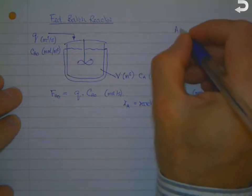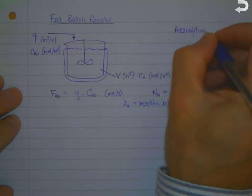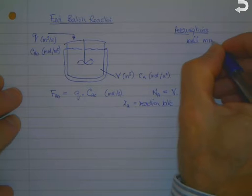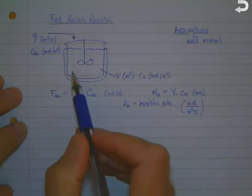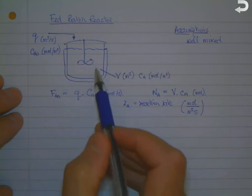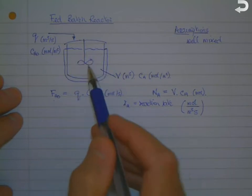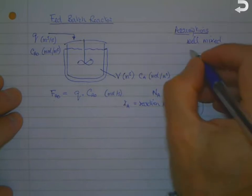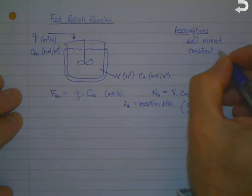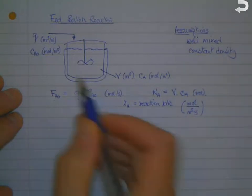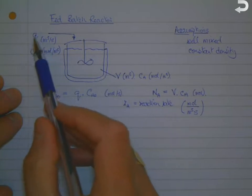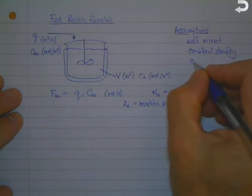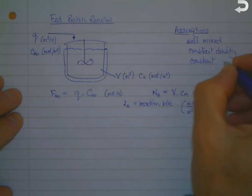Before we start, we need to state our assumptions. First, the reactor is well mixed, meaning composition and temperature at any point are the same as everywhere else and equal to the average. The added material Q is mixed in rapidly. We also assume constant density, so the density in the reactor equals the density of the added material and doesn't vary with time. Finally, for this derivation we assume the addition rate Q is constant.